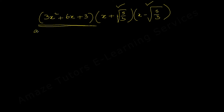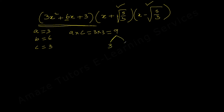For factorizing 3x² + 6x + 3, use the AC method: a = 3, b = 6, c = 3. Find AC = 3 × 3 = 9. Now find two factors of 9 whose sum equals the middle coefficient 6 — that is 3 and 3. Using these, split the middle term: 3x² + 6x + 3 becomes 3x² + 3x + 3x + 3.